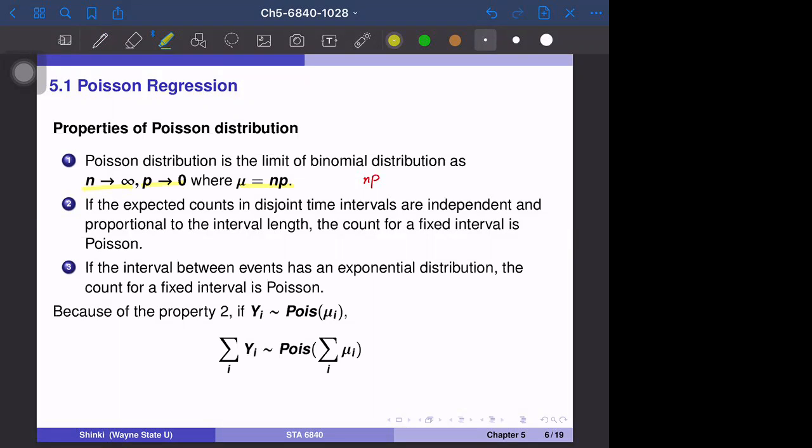The second property: if the expected counts in disjoint intervals are independent and proportional to interval length, then the count for a fixed interval is Poisson. Think about the number of phone calls a call center receives per hour or per minute. The first hour and second hour have the same distribution. The third period with only 30 minutes would have half the calls. Those three periods are independent. In this case, for a certain interval, the count or number of calls follows a Poisson distribution.